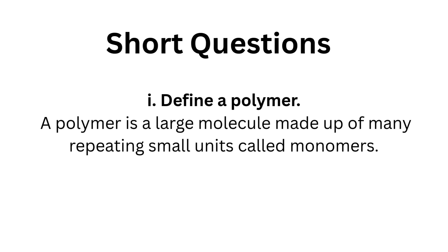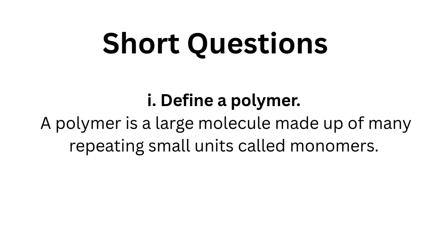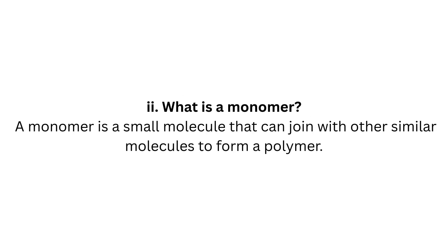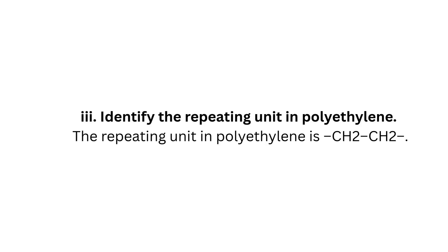Question 1: Define a polymer. A polymer is a large molecule made up of many repeating small units called monomers. Question 2: What is a monomer? A monomer is a small molecule that can join with other similar molecules to form a polymer.